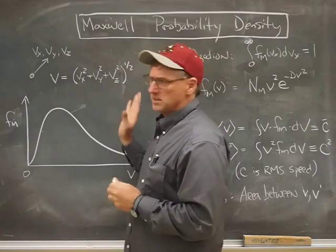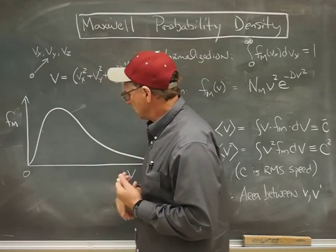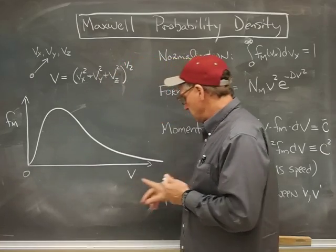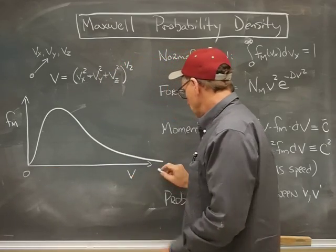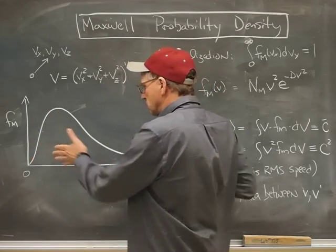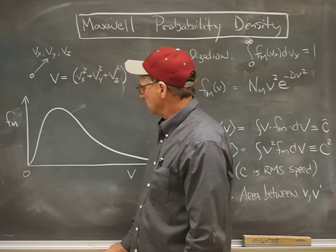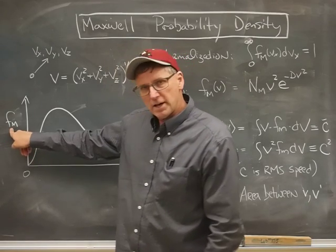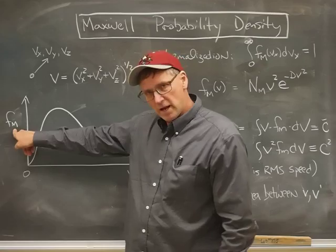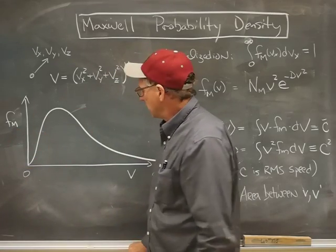Now, because of the way this is defined, speed can only be a positive number. And so the relevant range for speed, of course, is 0 out to some large number. And I've drawn here what the shape of that probability density looks like. It's symbolized as F with a sub-m for Maxwell, and it looks something like that.